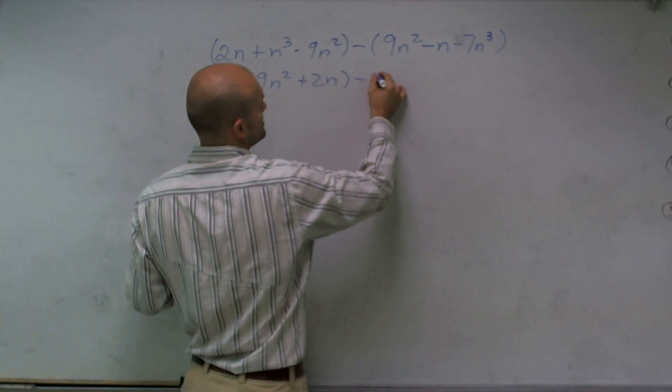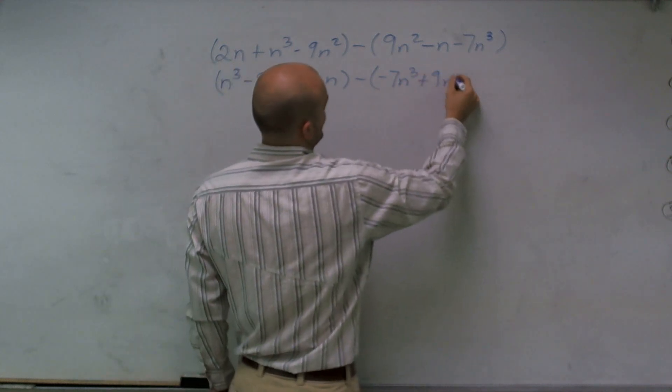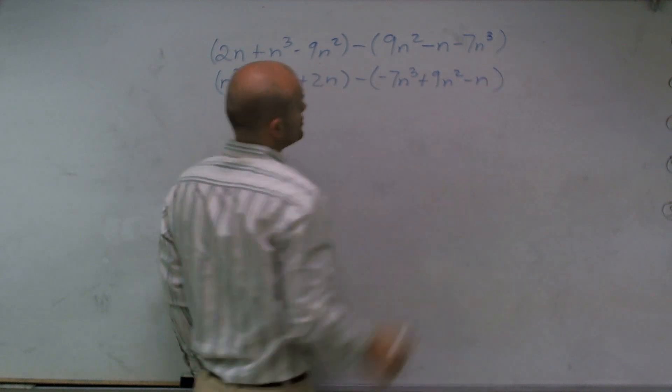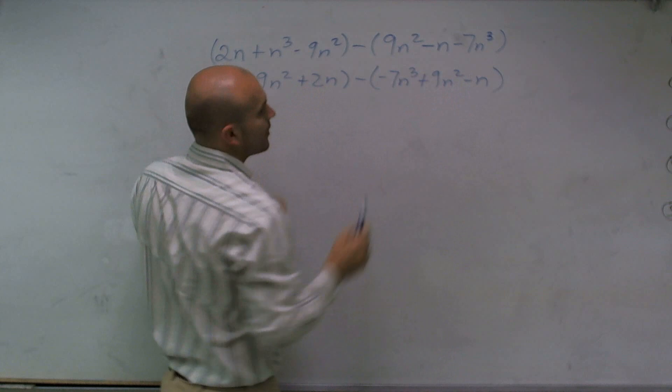Minus, and then let's do a negative 7n cubed, plus 9n squared minus n. So now you can see that my like terms are lined up, all right?